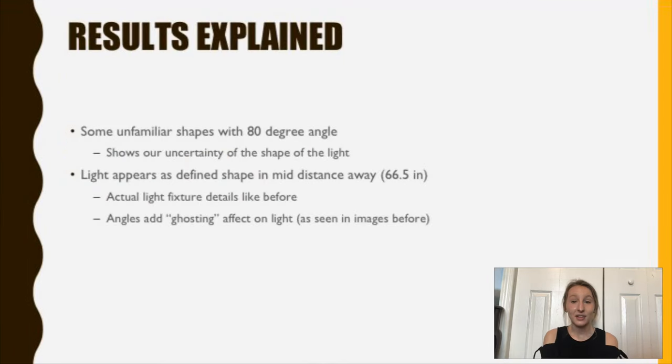So my results explained there were some unfamiliar shapes for sure at the 80 degree angle. And this shows our uncertainty of the shape of the light. And the light appears as a defined shape at the mid distance away. So for this case, it was 66.5 inches. And the actual light fixture details showed up in this image like before. And the angles added a ghosting effect to the light.